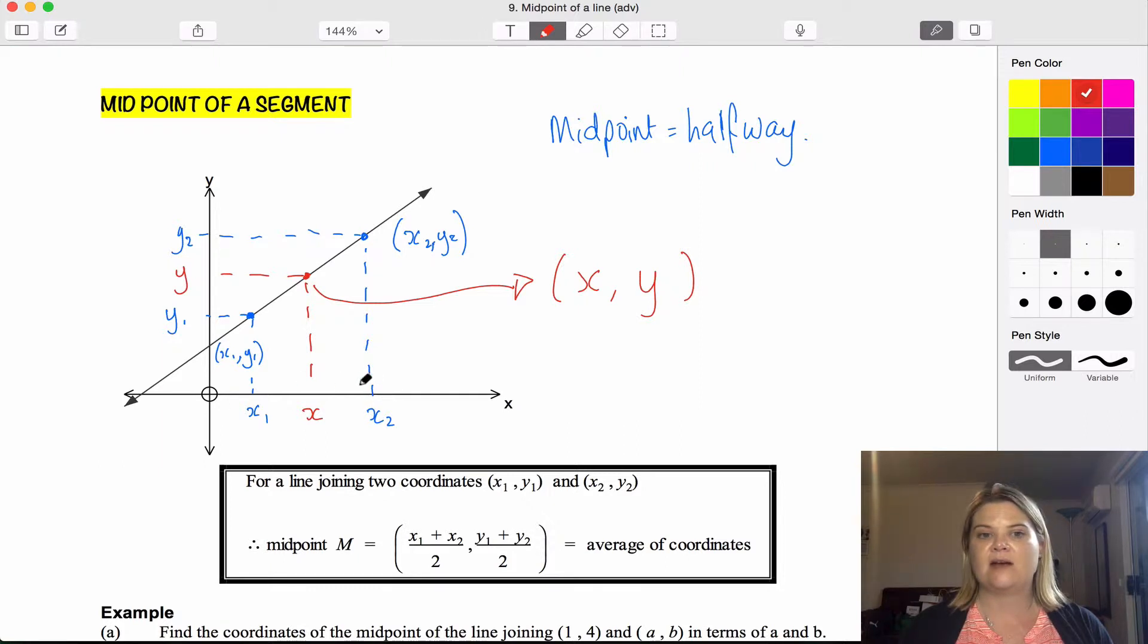Which is the same as finding the average of the two numbers: x1 plus x2 divided by 2. And for the y value up here we can add these two y values together and divide them by 2: y1 plus y2 divided by 2. And there's our two coordinate points.